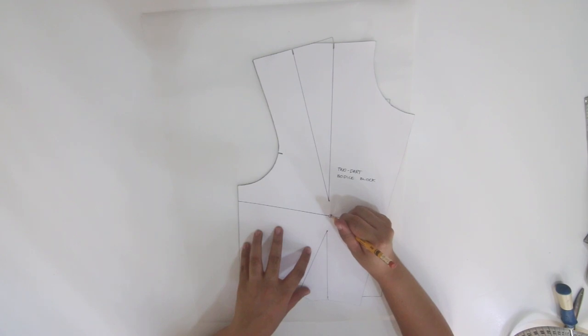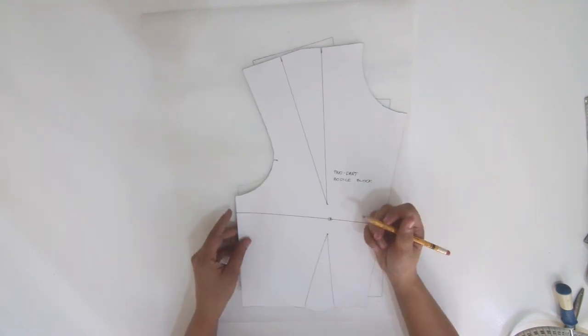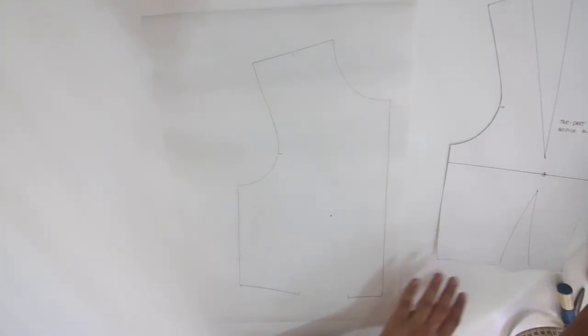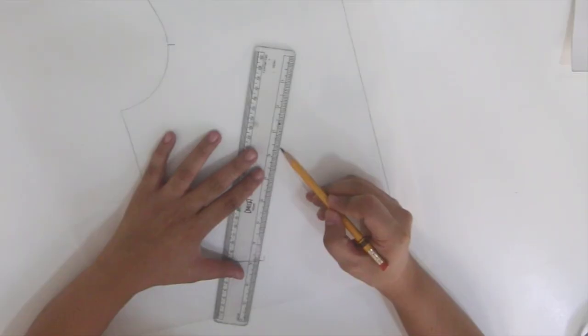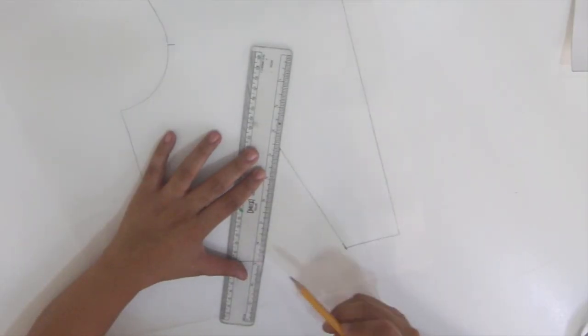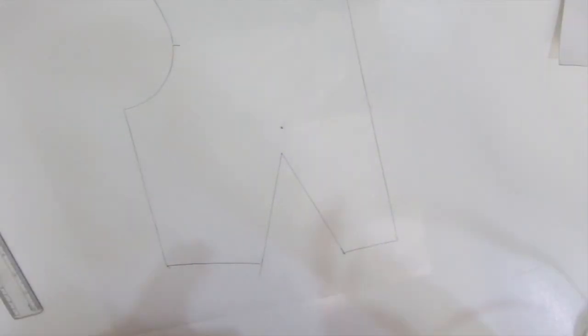Darken the bust point and the vanishing point of the waist dart. Draw the new dart legs until the vanishing point, making sure that both legs are of the same length.